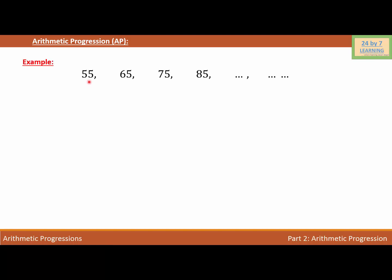Arithmetic progression. In order to define the arithmetic progression, I'm going to consider a sequence and then define a pattern for that sequence. Thereafter, we will talk about how arithmetic sequences are derived. So, let's consider an example. My sequence is 55, 65, 75, 85, and this sequence keeps going. If you look closely between these two numbers, the difference is 10.